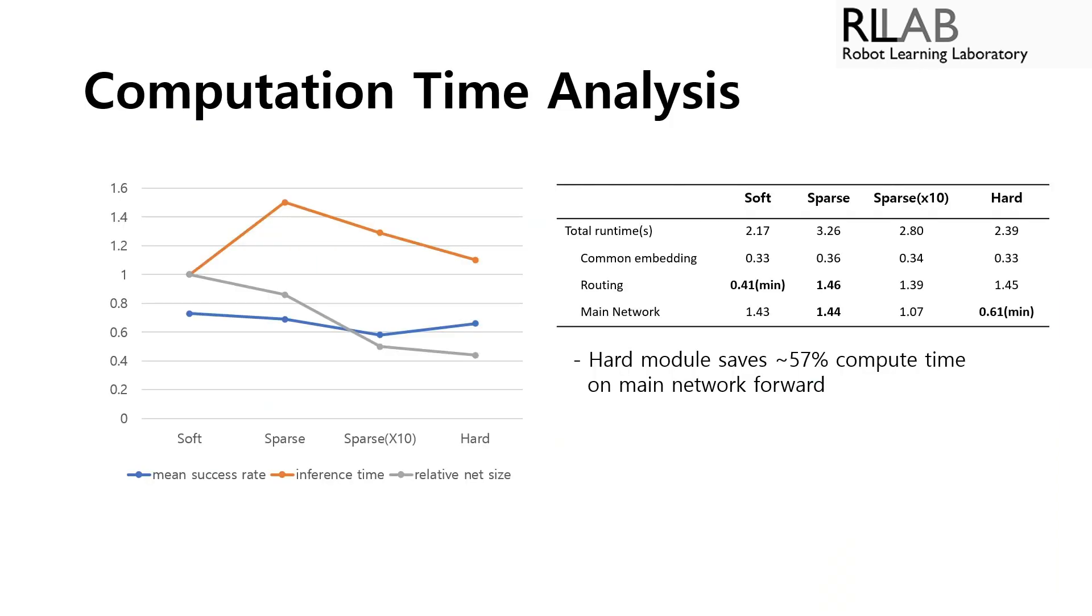So on the right is a breakdown of computational time for each stage. And in the final row, the main network forward time is saved up to 57% for hard modularization. And also the effective net size for each task is decreased as shown in the gray color on the chart to the left.